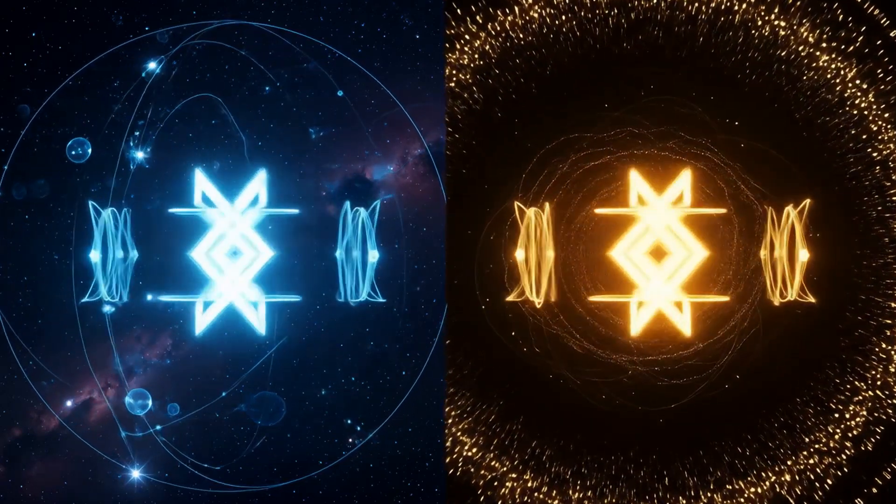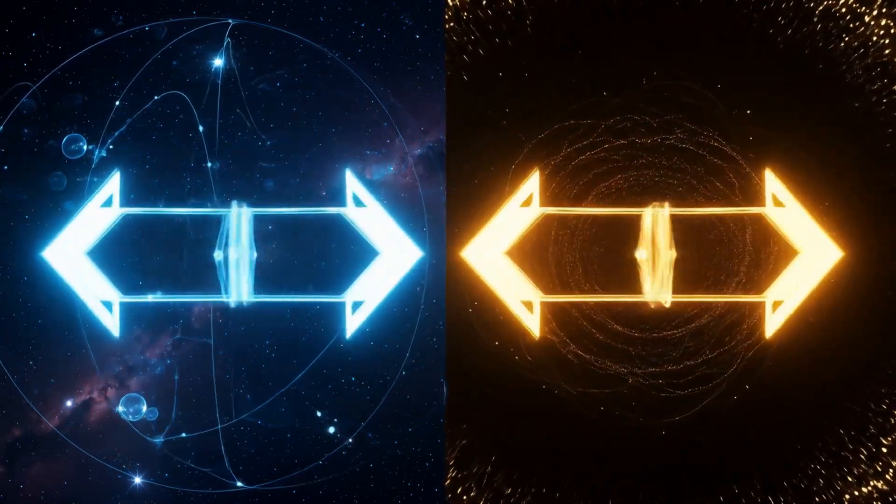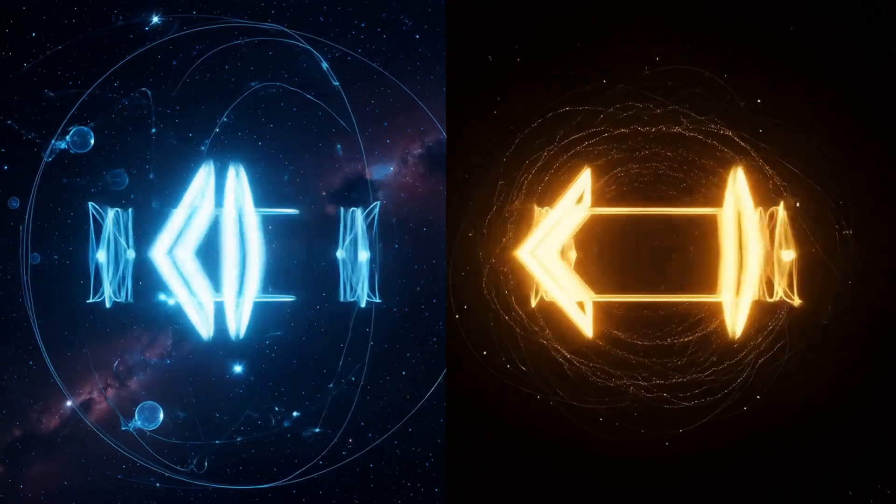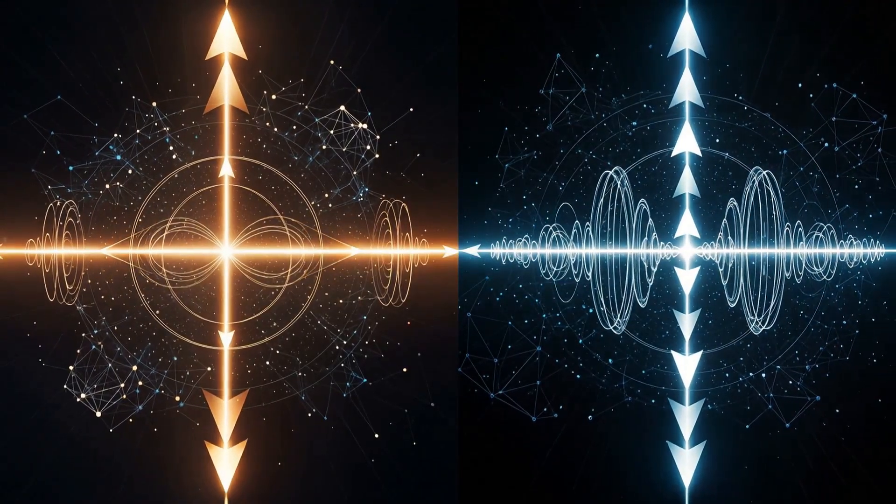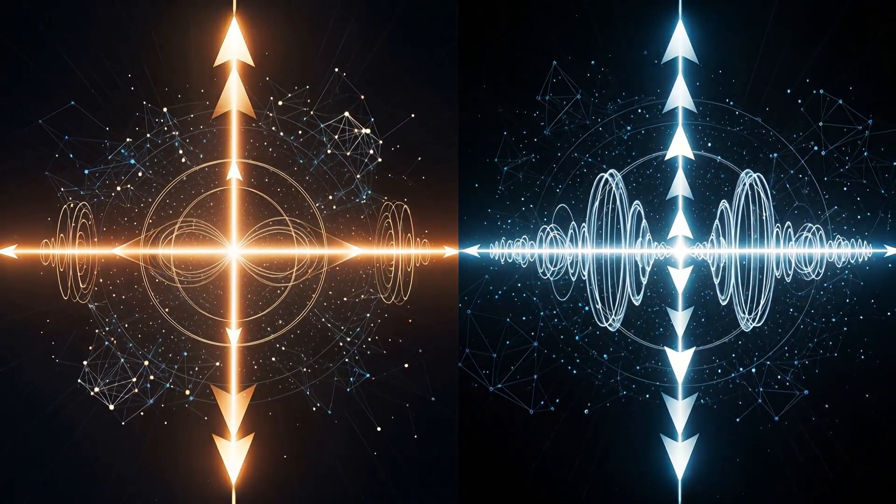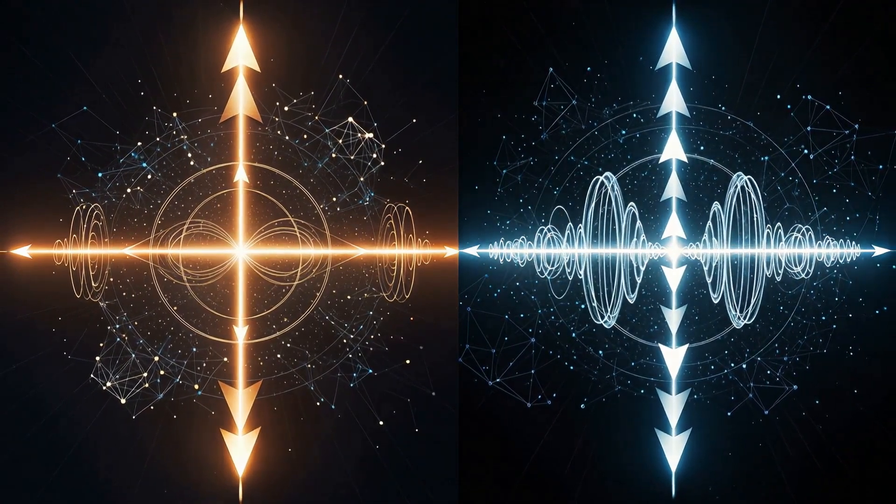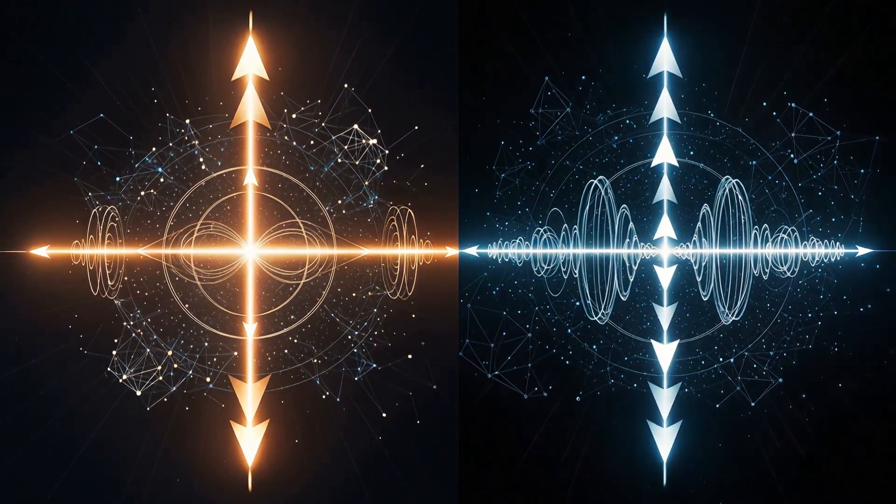Now watch as each horizon qubit aligns with its entangled partner in the singularity, like two identical vectors in high dimensional space. Perfect alignment means the probability of projection is one. Misalignment means the signal cancels.